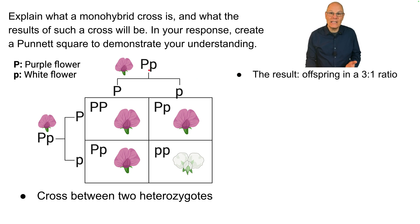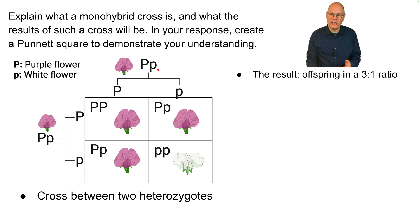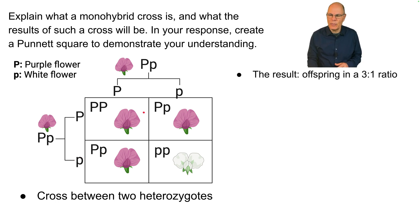To do a Punnett square, start by identifying the genotype of the parents — in this problem it's a monohybrid cross: big P, little p, crossed with big P, little p. Think of this as a germ cell going through meiosis: the homologous pairs separate — principle of segregation — so some gametes will have big P and some will have little p. That's true for each parent. Flowers are hermaphroditic, so it doesn't quite make sense to talk about father and mother in this case.